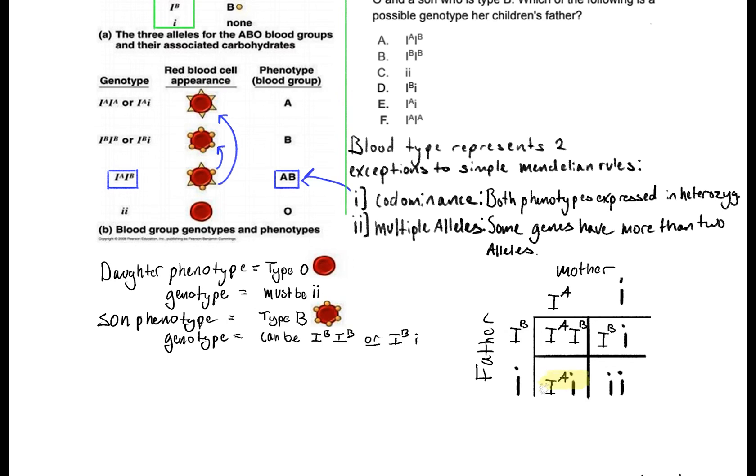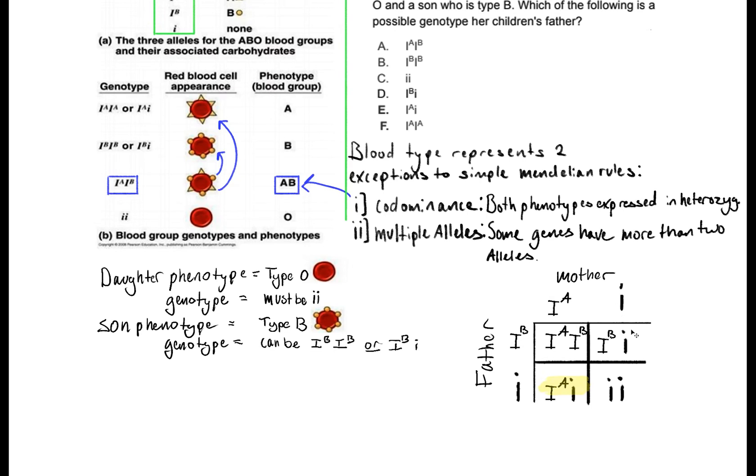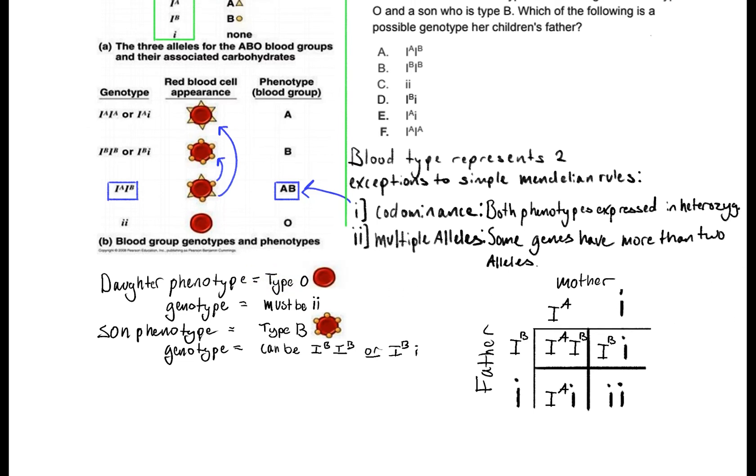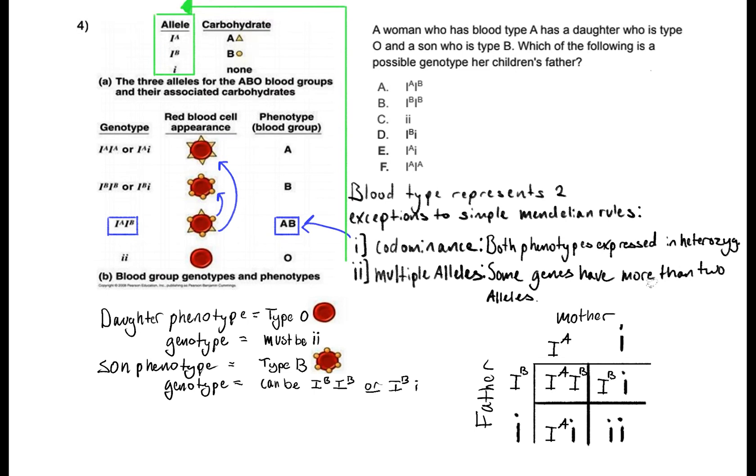We also have an IA, little i genotype here which would result in a blood type A phenotype however we don't have any offspring that that's observed. Anyways we see our last possible genotype combination here little i, little i that resulted in our daughter's phenotype of type O. So we cross-checked everything we now know that our father must be IB, little i if we have a daughter that's type O and a son that's type B with a mother that is type A.